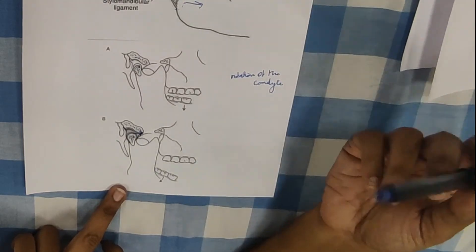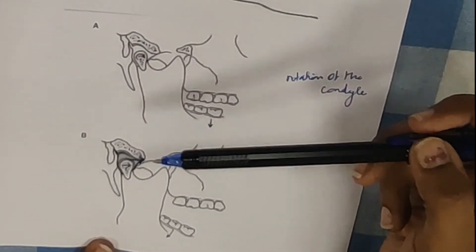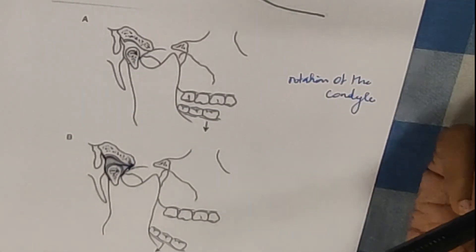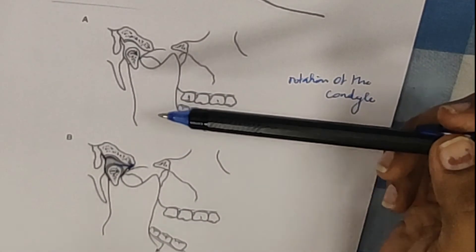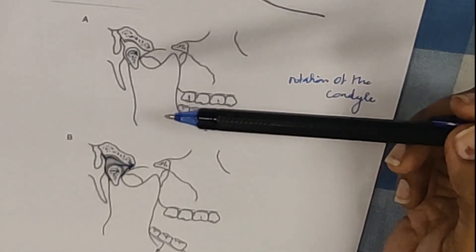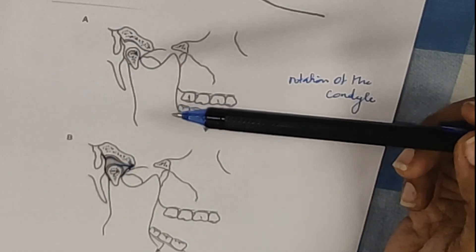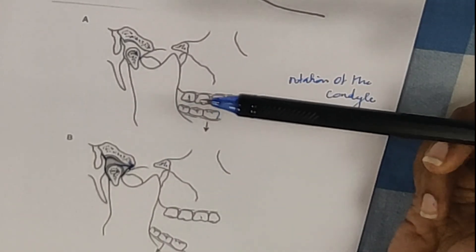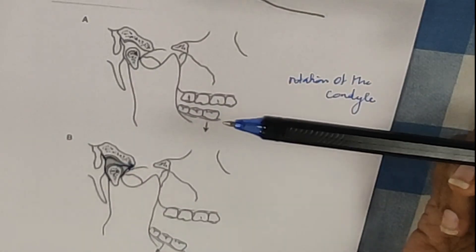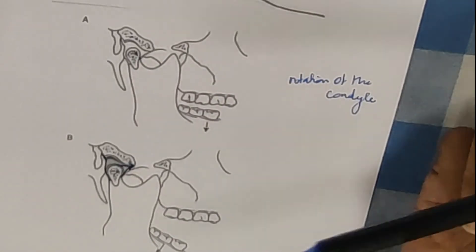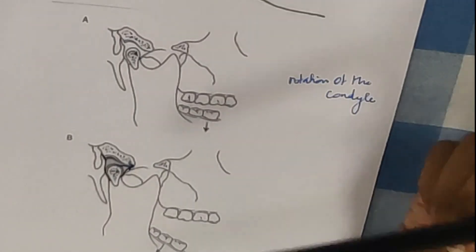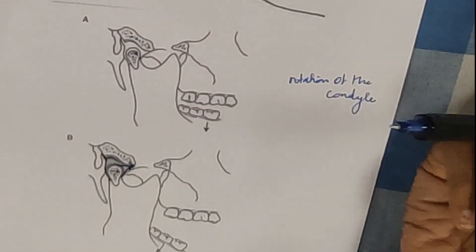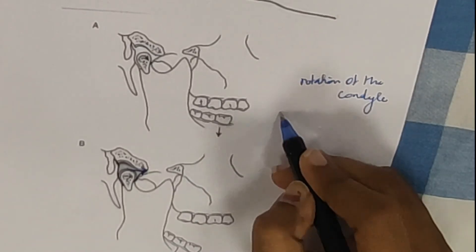Both the lower and upper joints must move — first the lower joint, then the upper joint — for complete mouth opening. However, there is another theory suggesting that these movements do not happen one after the other. A lot of evidence suggests that rotation at the lower joint and translation at the upper joint happen synchronously, at the same time. Either way, we need to know that some rotation at the condyle and some translation at the upper joint are both necessary for complete mouth opening.